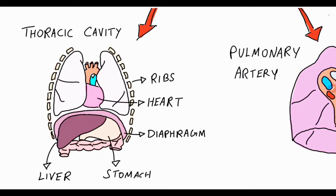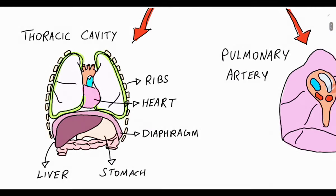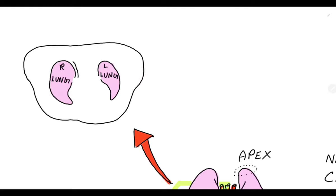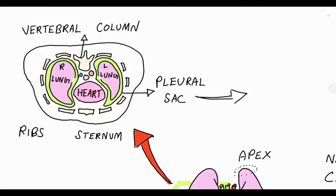The pleura is a thin layer of tissue that covers the lungs and lines the interior wall of the chest cavity. A transverse cross section of the lungs also reveals that posterior to the lungs there is the vertebral column, and anterior to the lungs there is the sternum.